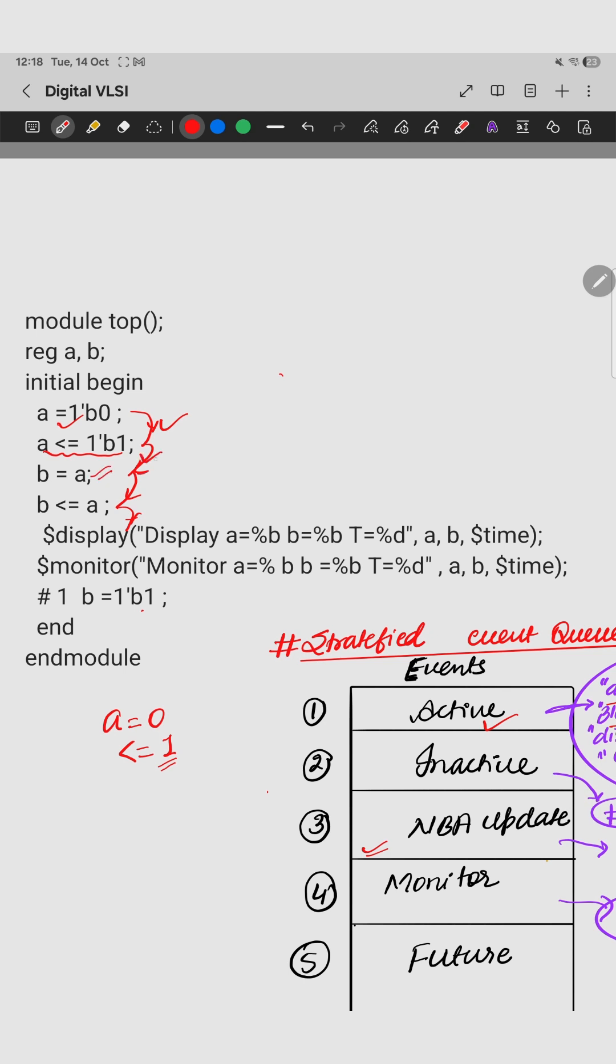Now next coming to this point, we have B is getting the value of A. That means whatever the value A is having, we will get it. So B is getting the value of A equal to 0, and not this value, because this is not yet assigned to it. This statement will be updated to A in the third step.